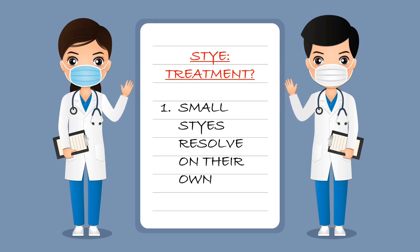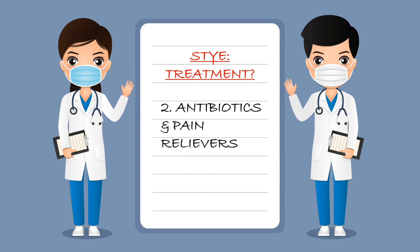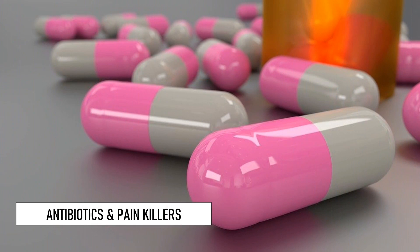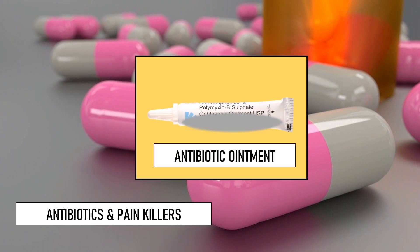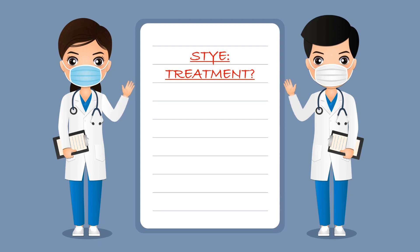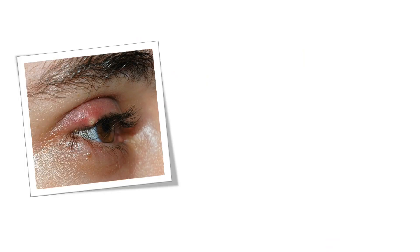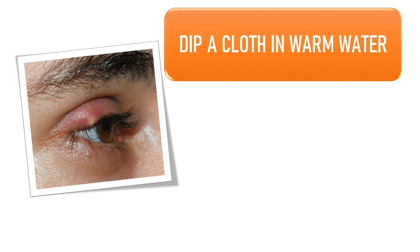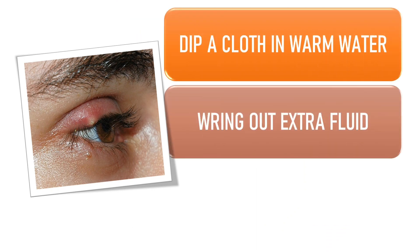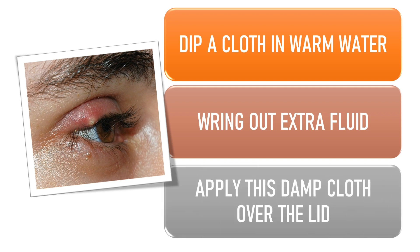How do you treat a stye? Most styes, especially small ones, resolve on their own without any treatment. For other cases, depending on the severity, your doctor may prescribe antibiotic capsules and pain relievers, along with an antibiotic ointment for application on the lid. To reduce eyelid swelling, warm compresses are highly recommended — dip a cloth in warm water, wring out the extra fluid so it is not dripping, and apply this damp cloth on your lid with your eye closed.